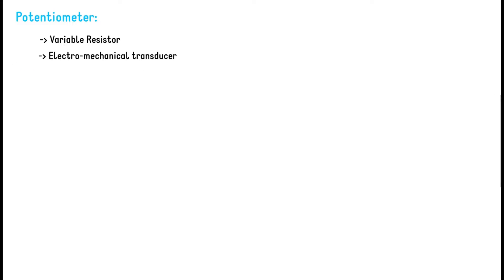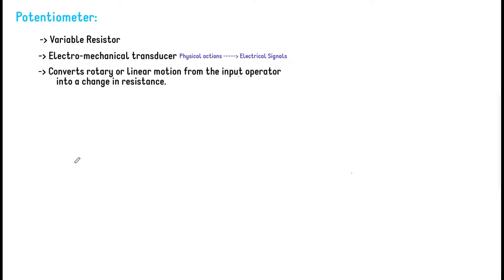A transducer converts one physical action into an electrical signal. For example, an audio microphone converts sound — a physical action — into an electrical signal. A potentiometer is an electromechanical transducer because it converts a mechanical action — rotary motion — into a change in resistance, and thus a change in electrical signal.